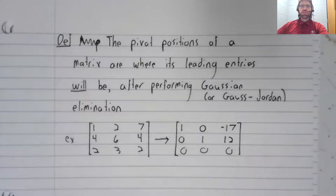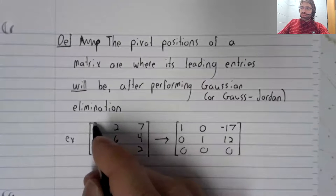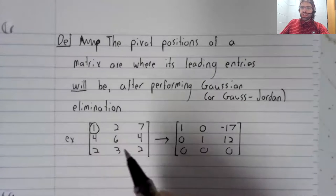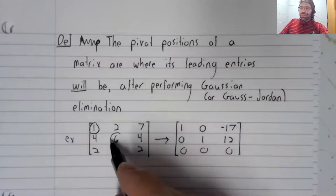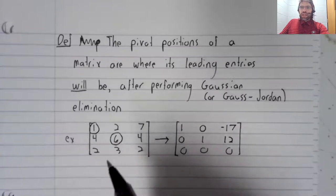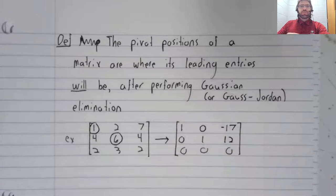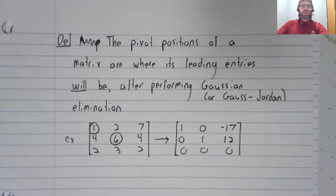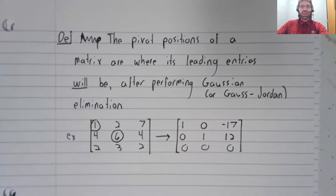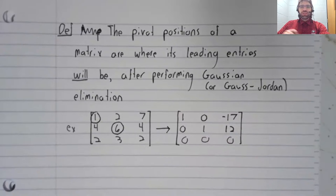The third row doesn't have a leading entry. So the pivot positions of this matrix are here and there. To find the pivot positions, you perform Gaussian elimination or Gauss-Jordan elimination. There's no other way to do it.